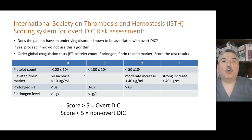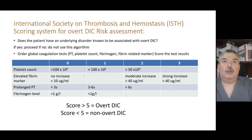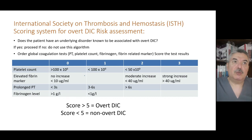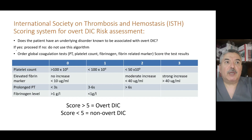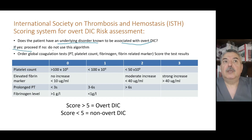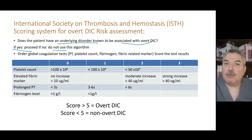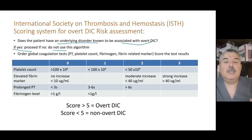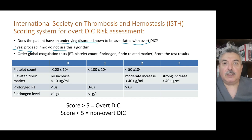The scoring system for DIC comes from the International Society on Thrombosis and Haemostasis. The system begins by asking: does the patient have an underlying disorder known to be associated with DIC? If yes, proceed with scoring. If no, don't use this score — because DIC is never primary. This system only scores DIC, which is always secondary, so don't use it for any other bleeding disorder.